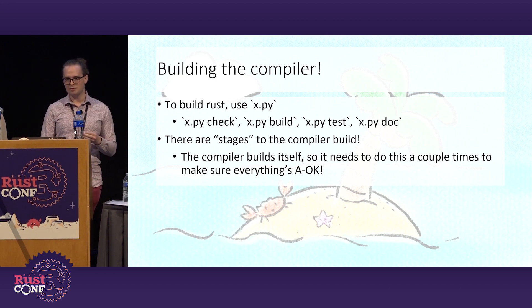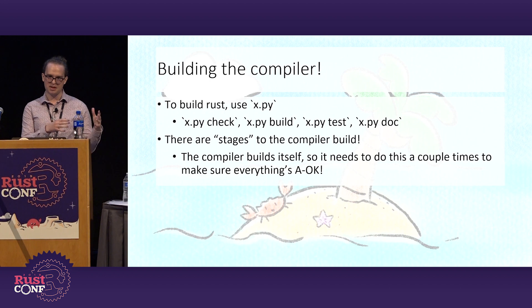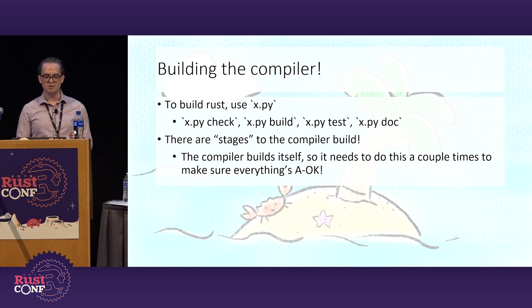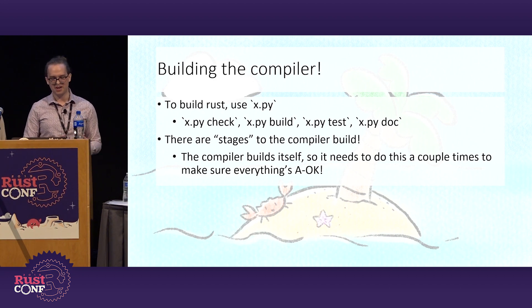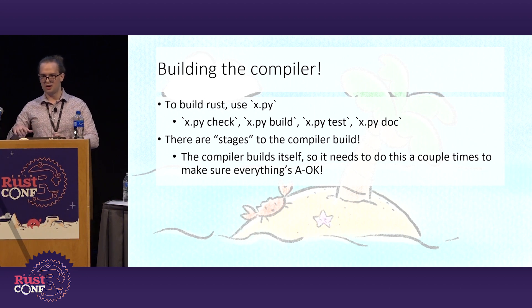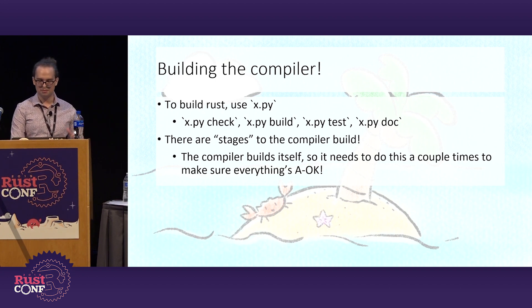As I mentioned, building the Rust compiler, you don't use cargo directly — it has its own little build tool that manages putting the compiler together. Because the Rust compiler is itself written in Rust, it needs to build itself a couple of times to make sure everything is valid and you get a usable compiler at the end. So instead we use x.py, which is just a Python script included in the repo. It works a little bit like cargo — you've got check, build, test, and doc. There are also stages because it kind of builds itself. Depending on what you're working on, you can skip the last build and work on stage one, or sometimes you need to work on stage two. If you wonder which one you need, talk to someone on the compiler team — they'll probably point you in the right direction.